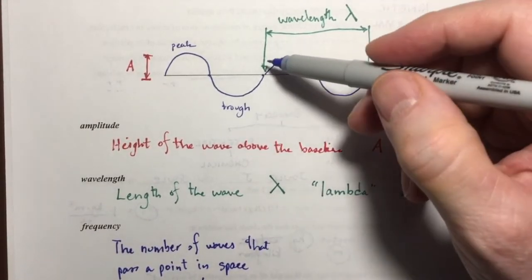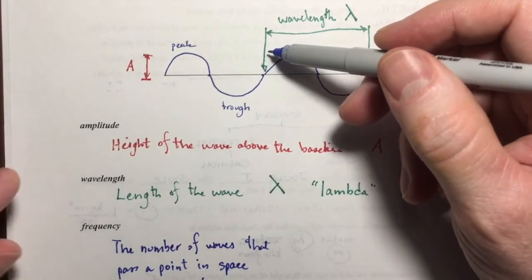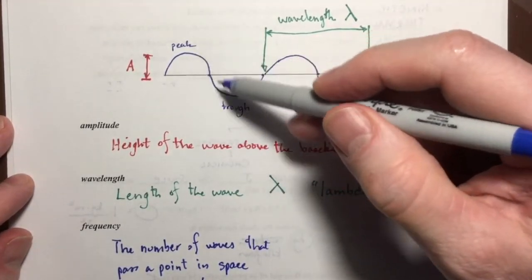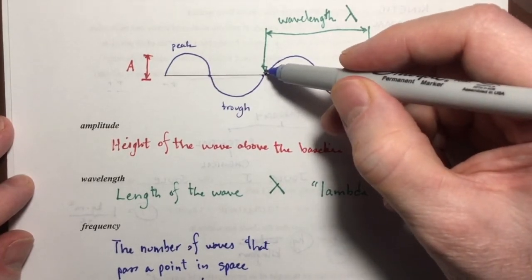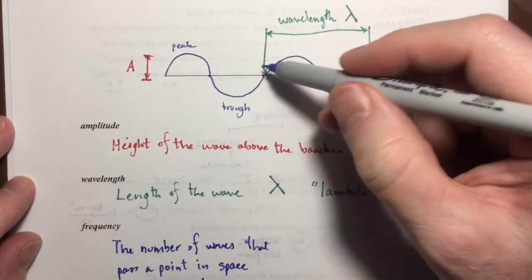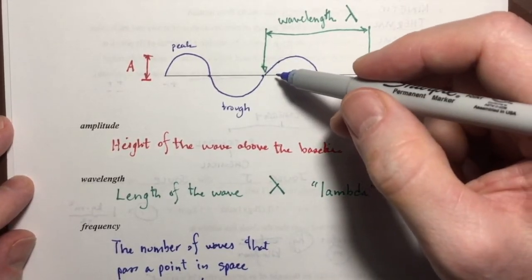The number of waves that pass a point in space every second. So if you imagine that you are standing on the side of this pool and someone jumps into the pool at the other end and they start making waves, if you were to stand at the edge of the pool and count the number of waves that pass by you every second, that would be the frequency.